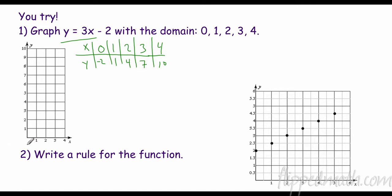Now 0, negative 2 does not fit on this graph. That's okay. You don't have to graph that point then. 1, 1, we come over here. 2, 4, go over 2, up 4. 3, 7, 4, 10. There you have it.